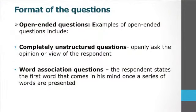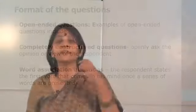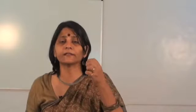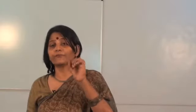The second type includes a few examples of open-ended questions. One is the completely unstructured question, where you openly ask the opinion and view of the respondent. Another type is the word association question, where the respondent states the first word that comes to mind once a series of words are presented, and from that first word you can make connections or inferences.